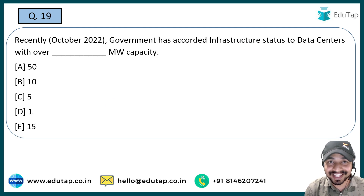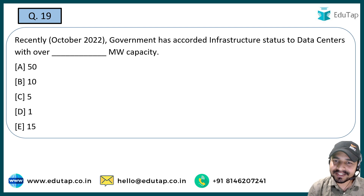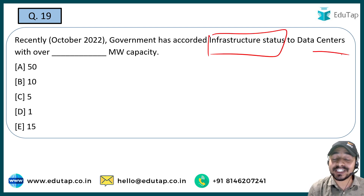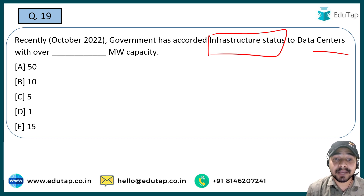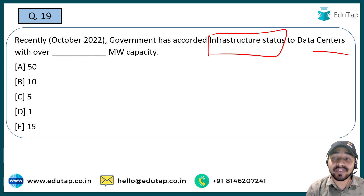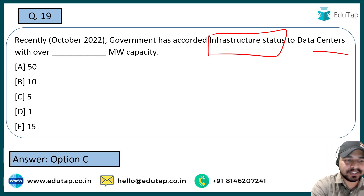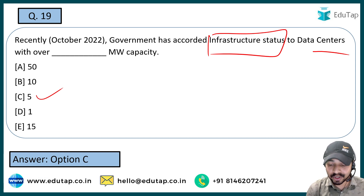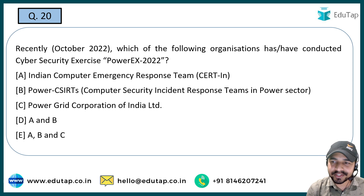The next question: the government has recently accorded infrastructure status to data centers with over how many megawatt capacity? The right answer is basically 5 MW capacity — whatever plants have over 5 MW capacity, the Government of India has given them infrastructure status.